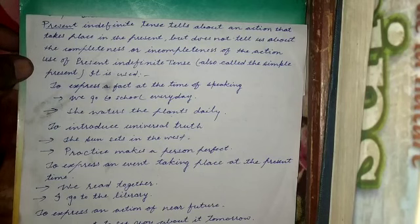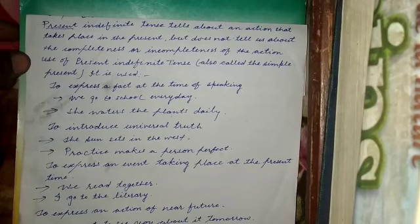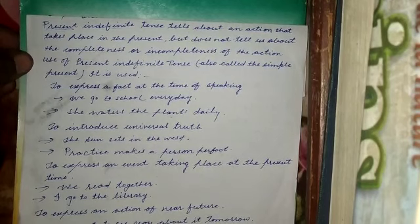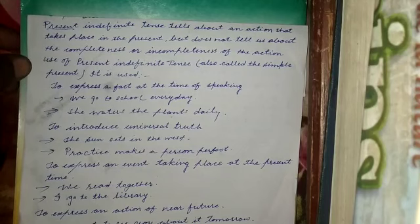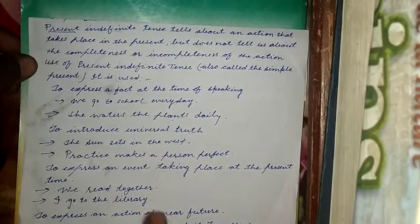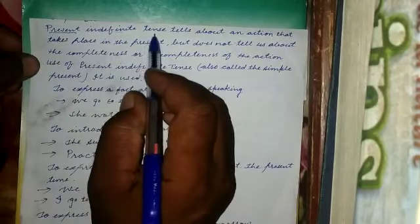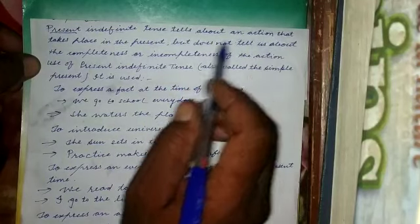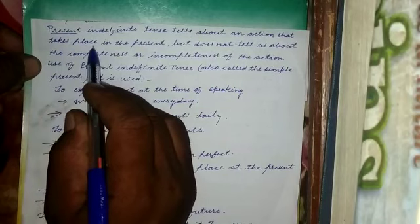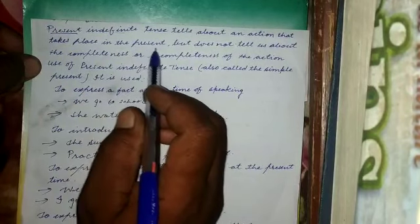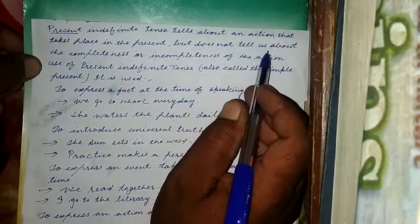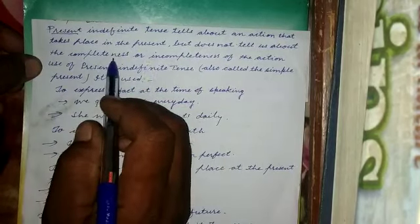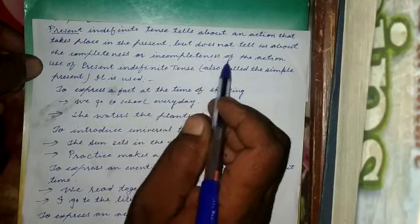Today we will discuss about present indefinite tense. Present indefinite tense tells about an action that takes place in the present, but does not tell us about the completeness or incompleteness of the action.